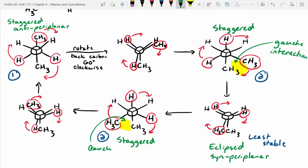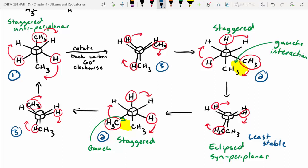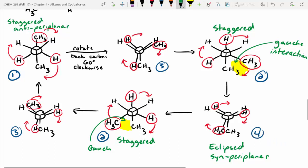That one has a gauche interaction, and this one also has a gauche interaction. We've identified most stable, least stable, and second most stable. That leaves third most stable — it's going to be a tie between the remaining two, so I'd say three and three. That means our least stable is fourth. The remaining eclipsed conformations don't need any fancy names — they're just called eclipsed.